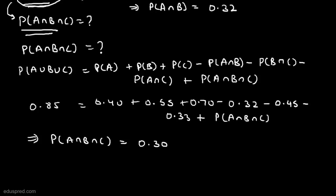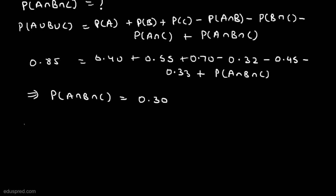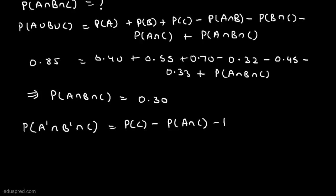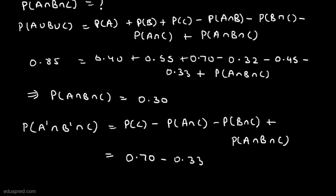Now we have all the probabilities needed. Applying the formula: P(Aᶜ ∩ Bᶜ ∩ C) = P(C) − P(A ∩ C) − P(B ∩ C) + P(A ∩ B ∩ C) = 0.70 − 0.33 − 0.45 + 0.30 = 0.22. So the required probability for part C is 0.22.